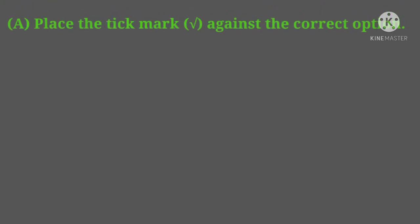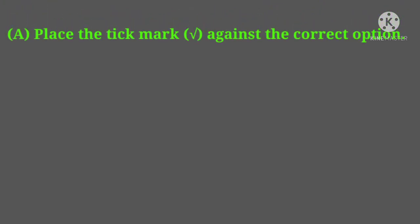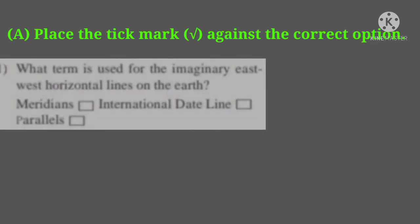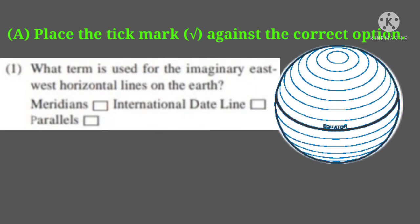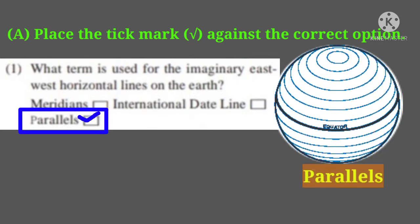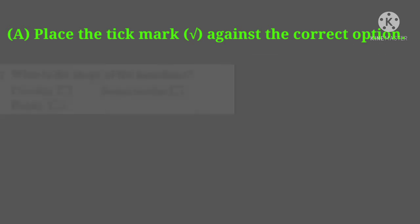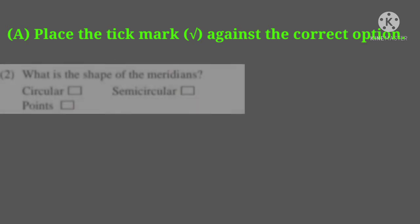Welcome back students. Here is question A: place a tick mark against the correct option. First one: what term is used for the imaginary east-west horizontal lines on the earth? Three options are given: meridians, international date line, and parallels. The correct answer is parallels.